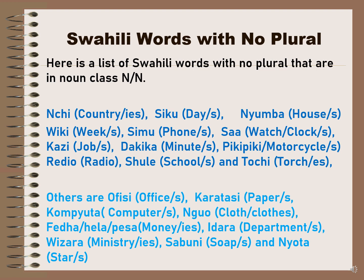Here is a list of Swahili words with no plural that are in noun class NN. One is 'nchi,' which means country or countries. 'Siku' can be day or days depending on how you use it. 'Nyumba' is a house or houses. 'Wiki' means week or weeks. 'Simu' is phone or phones. 'Saa' means watch or clock, or watches or clocks. 'Kazi' is job and can also be jobs. 'Dakika' is minute or minutes. 'Pikipiki' is motorcycle or motorcycles. 'Radio' is radio. 'Shule' is school or schools. 'Tochi' is torch or torches.